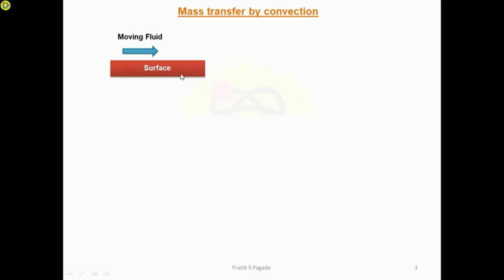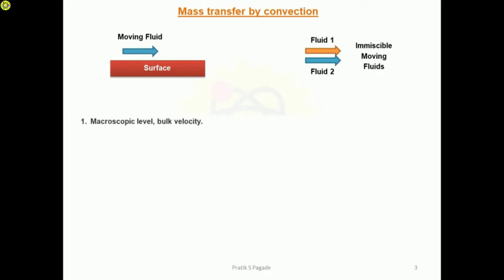Next is mass transfer by convection. Suppose there is a surface and on this surface there is a moving fluid — this causes convective mass transfer. Also, when there are two immiscible moving fluids (immiscible means they do not mix with each other), mass transfer by convection occurs in both these cases.